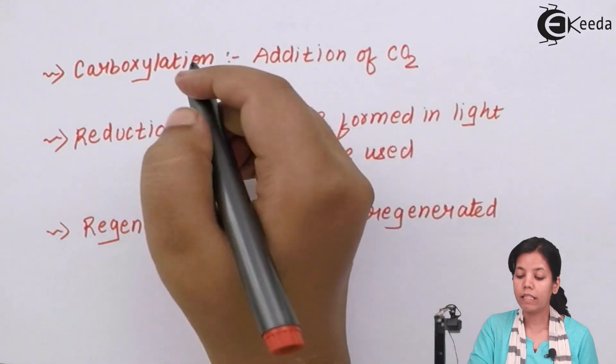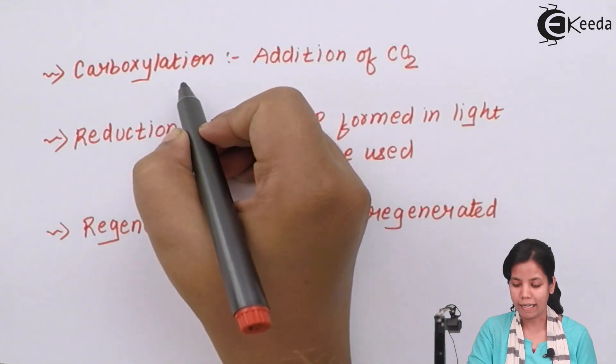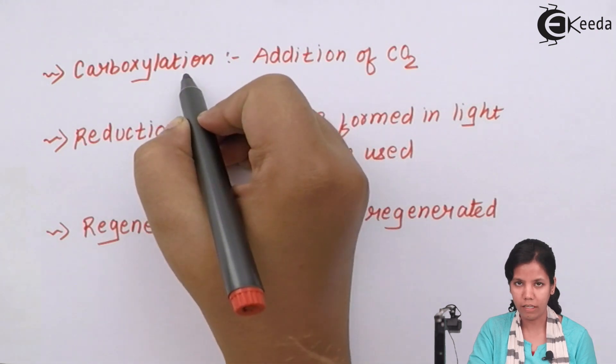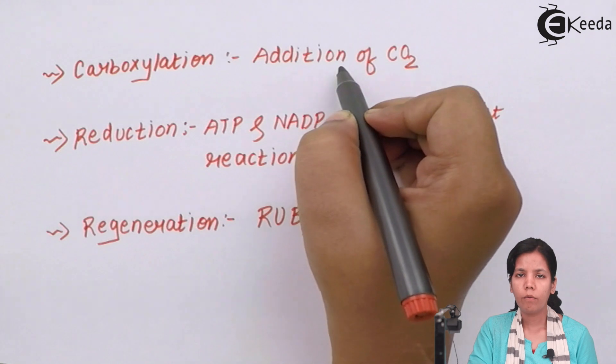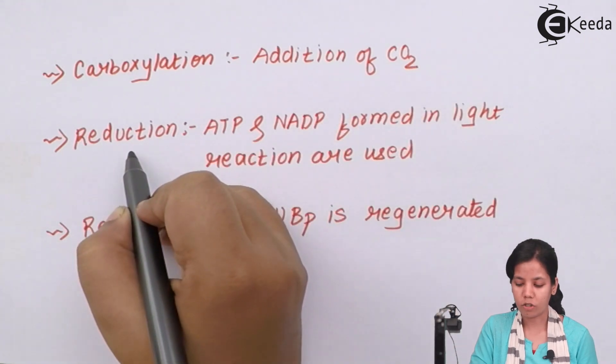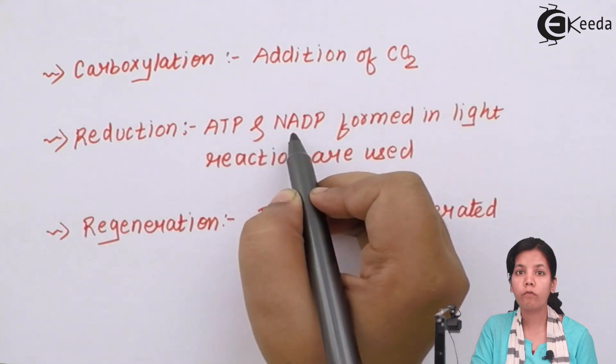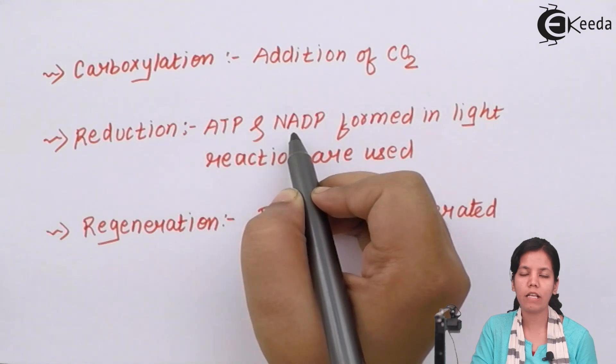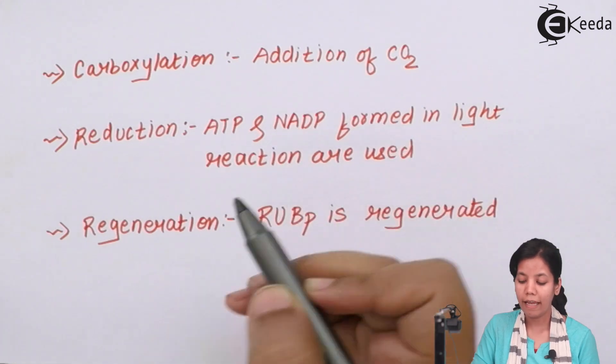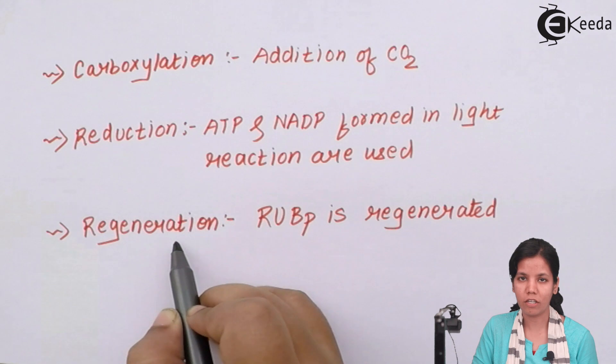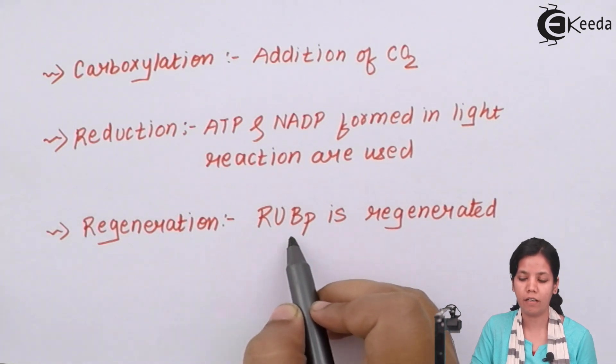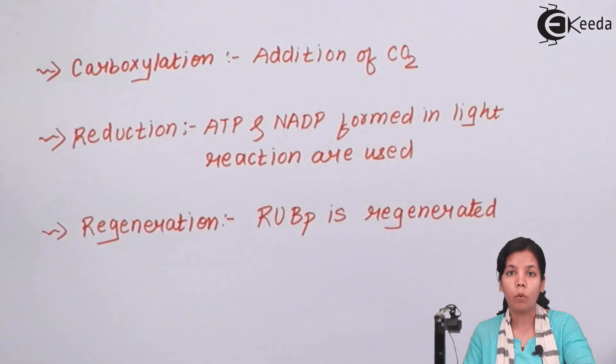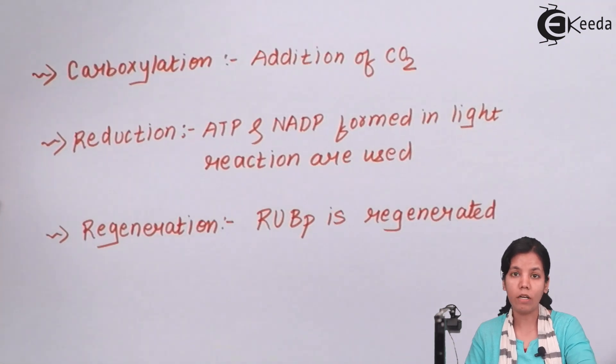Three steps of dark reaction or Kelvin cycle are carboxylation which is addition of CO2. The second step is reduction ATP and NADP from the light reaction of photosynthesis are used in dark reaction. And the third step is regeneration or getting back of RUBP ribulose biphosphate. Now we will see what are the chemical components and how does Kelvin cycle actually takes place.